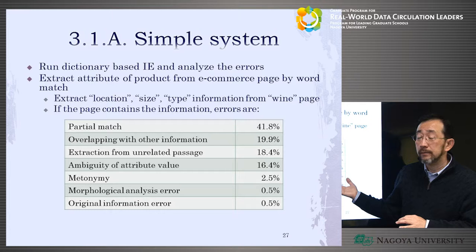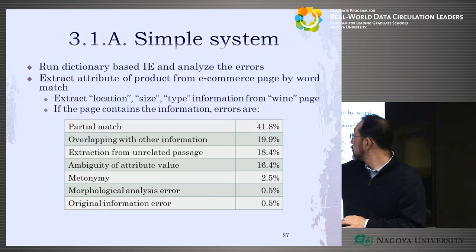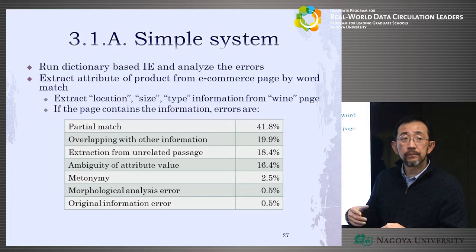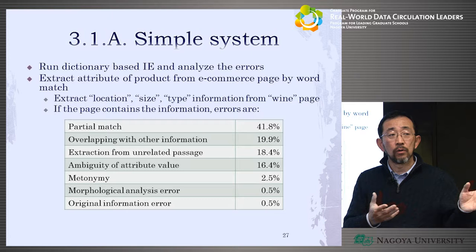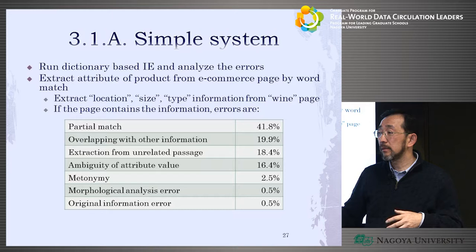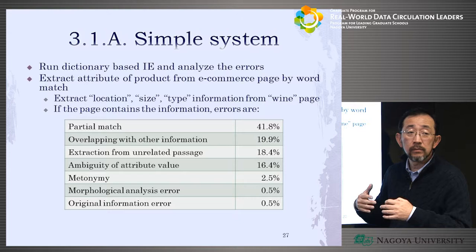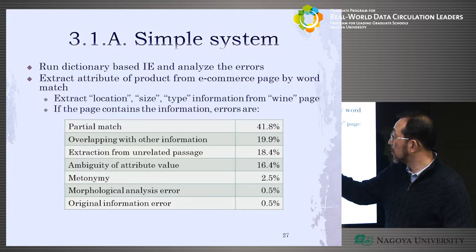They then looked at what kind of errors there are. The system is very simple, so they can analyze it nicely. The biggest error is partial matching — for example, if the dictionary has 'France' but the location is 'North France,' you want to extract 'North France' as a location, but only 'France' is extracted. They identified this as a big problem and tried to find out how to solve it.